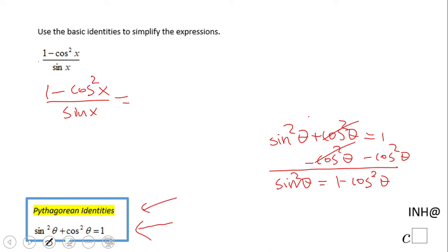So we have here sine squared, right? 1 minus cosine squared is sine squared, all of x, obviously. Let's keep the variable.